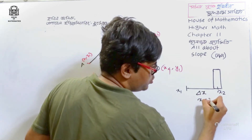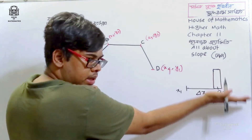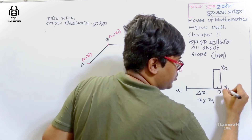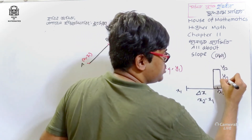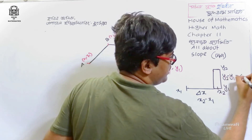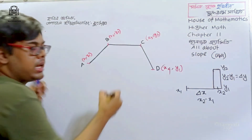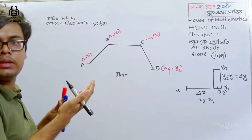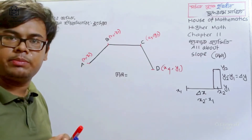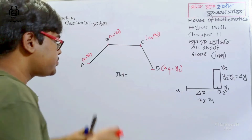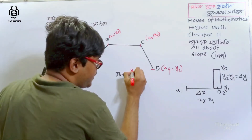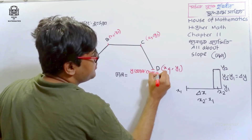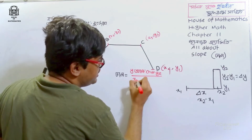x2 minus x1, y2 minus y1 — you see that x2 minus x1 is equal to y2 minus y1, which is delta y. So x2 minus x1 is the change in x, and y2 minus y1 is the change in y — the y of change divided by x of change.